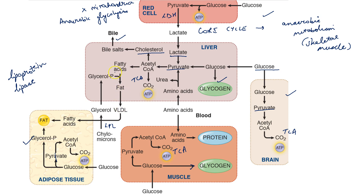The endogenous fat is transported to the peripheral tissues in the form of a lipoprotein called VLDL. This VLDL is also acted upon in the periphery by lipoprotein lipase to form fatty acids and glycerol.